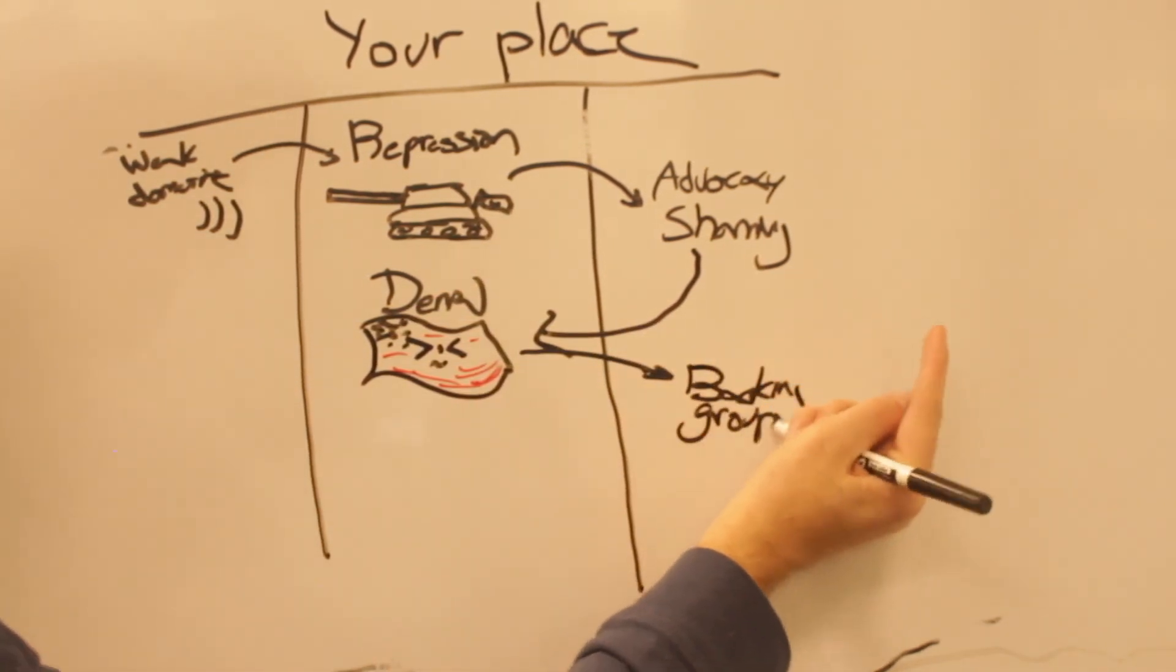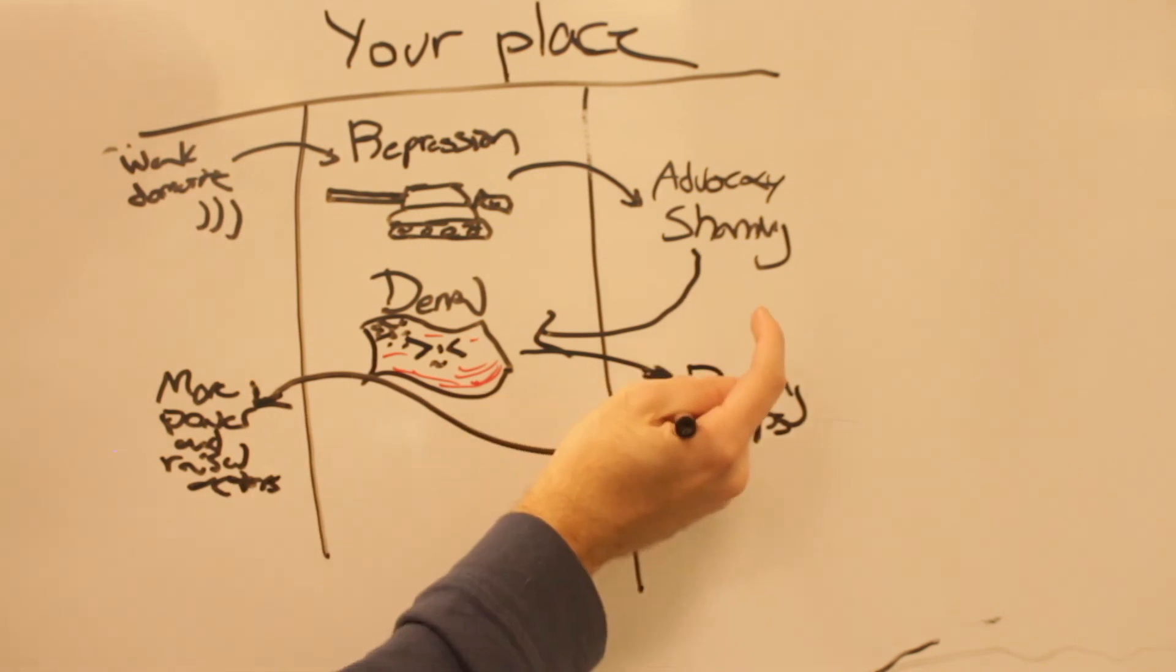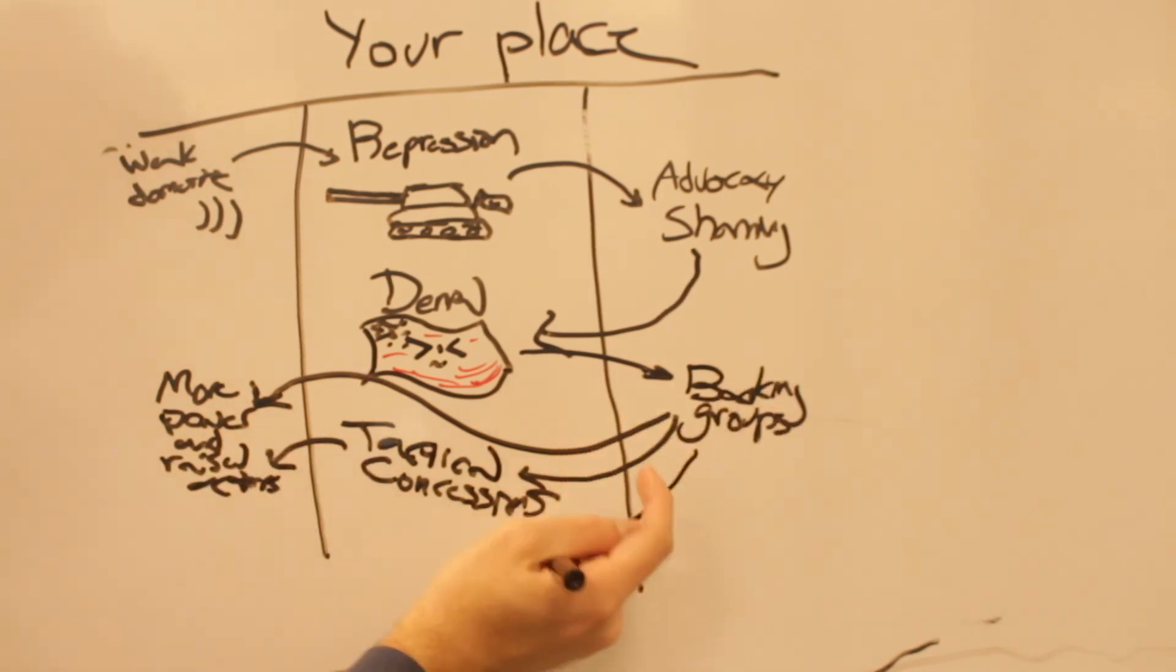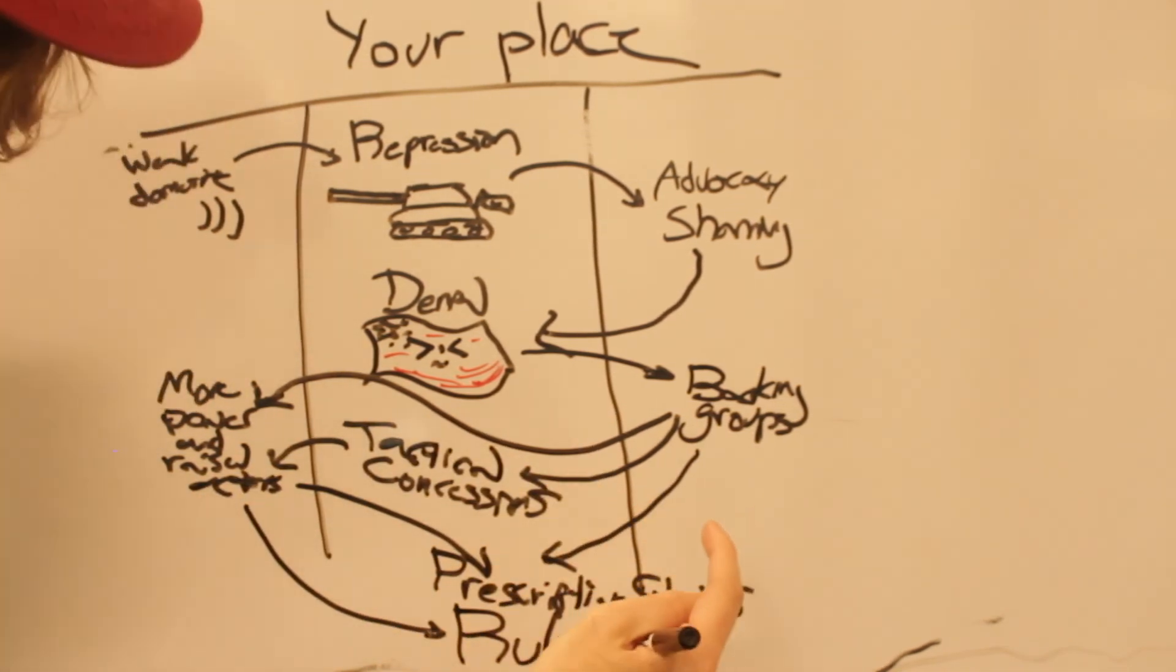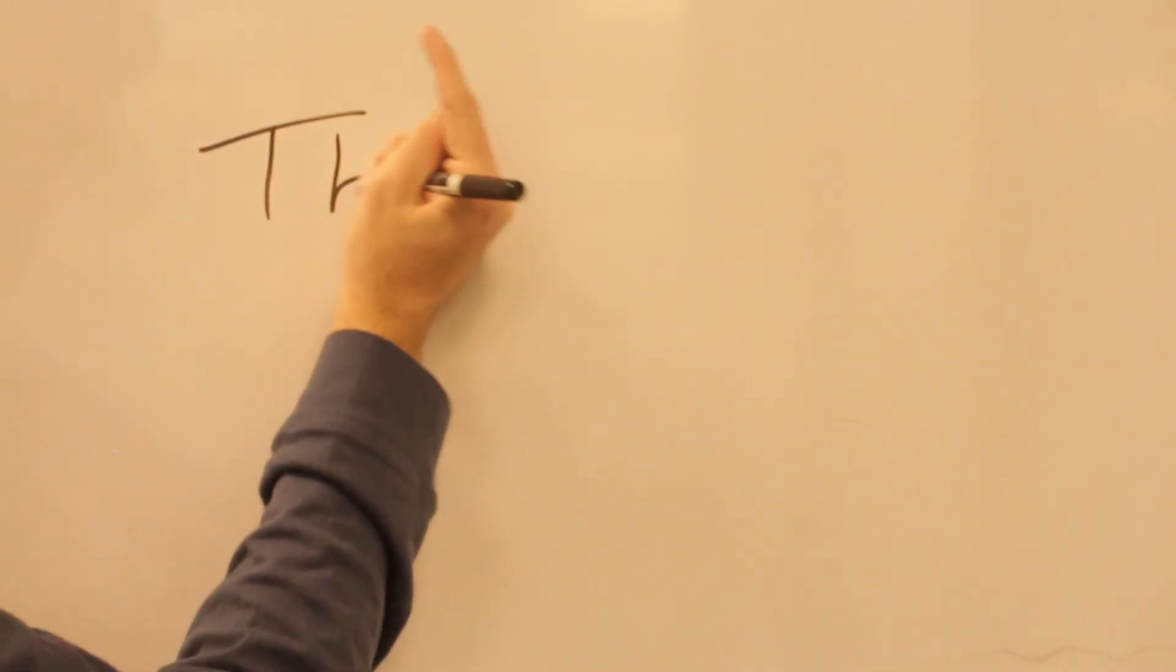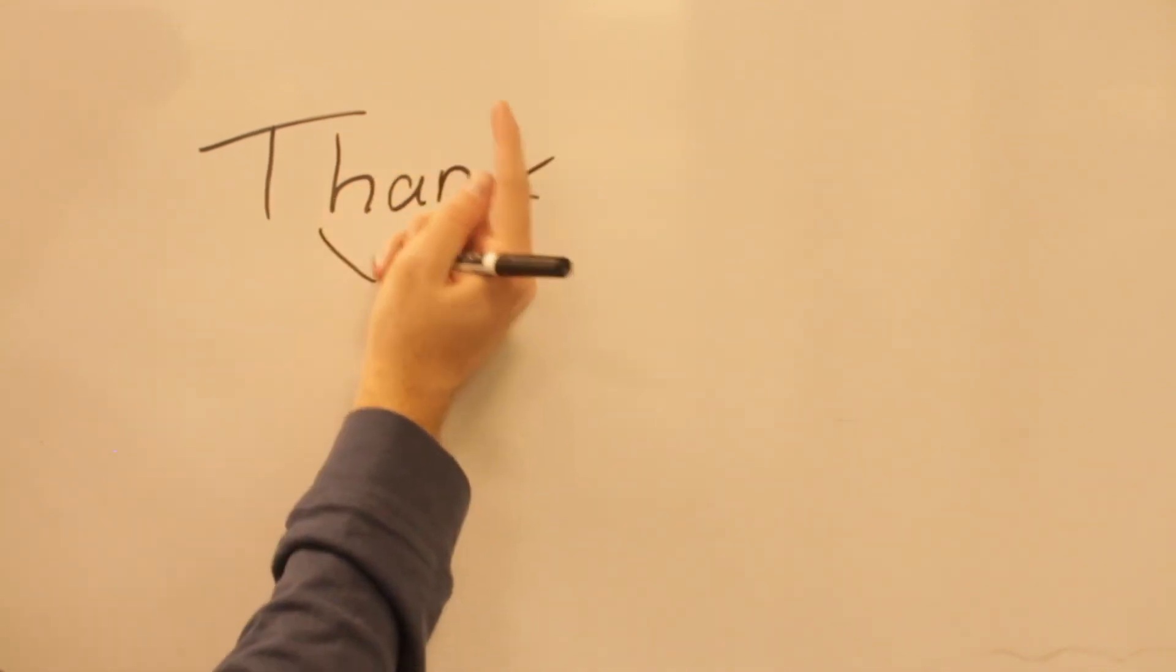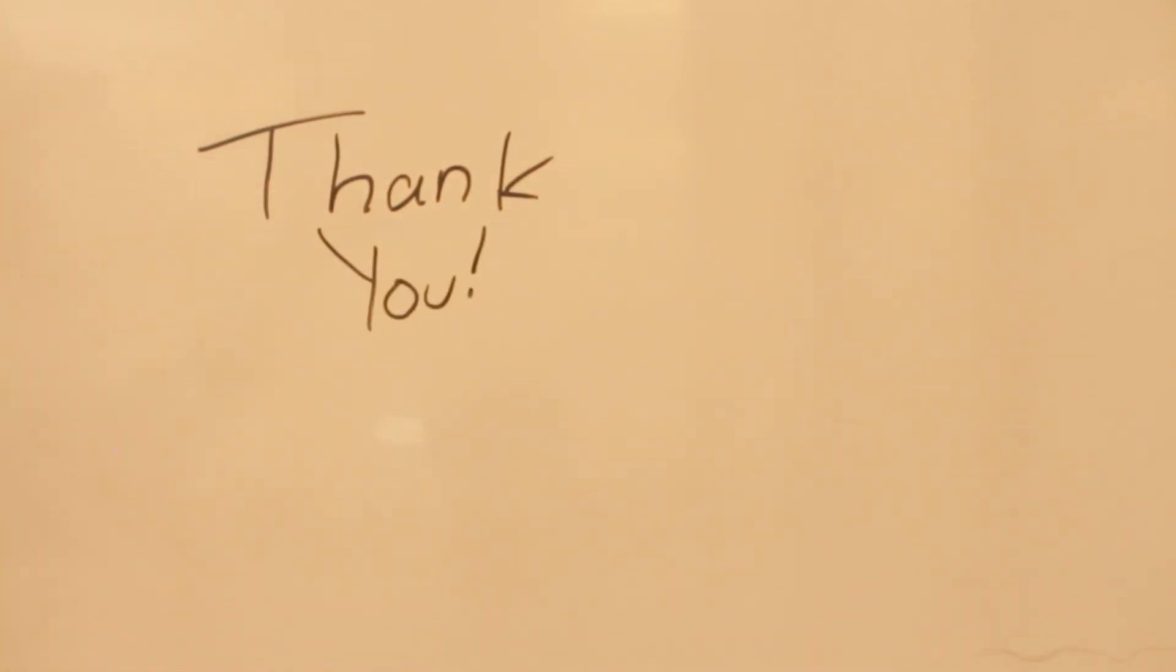However, our presence also goes towards aiding the local groups and making them more known, which brings about tactical concessions by the Chinese themselves. Through them and our efforts, we can create a prescriptive status to assist with the process and ultimately bring about real consistent behavior change. So it is through our efforts as advocates and shaming the Chinese for such behavior that we will be able to help the Uyghurs and human rights in China as a whole. Thank you for listening, and I hope you can help with this issue.